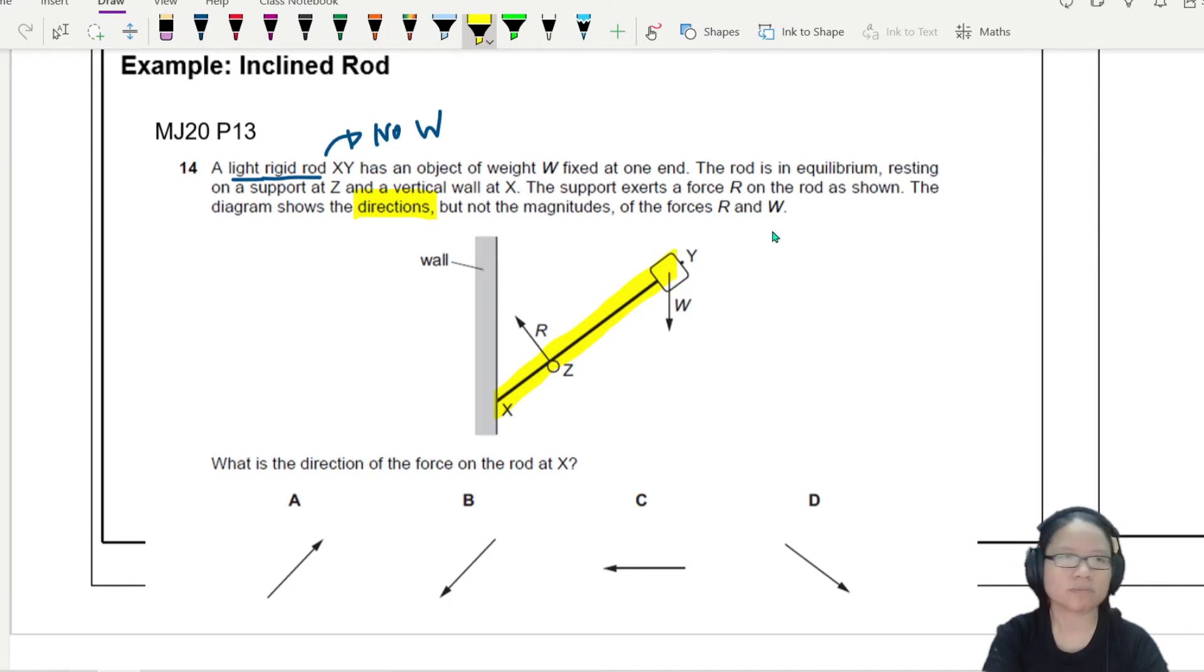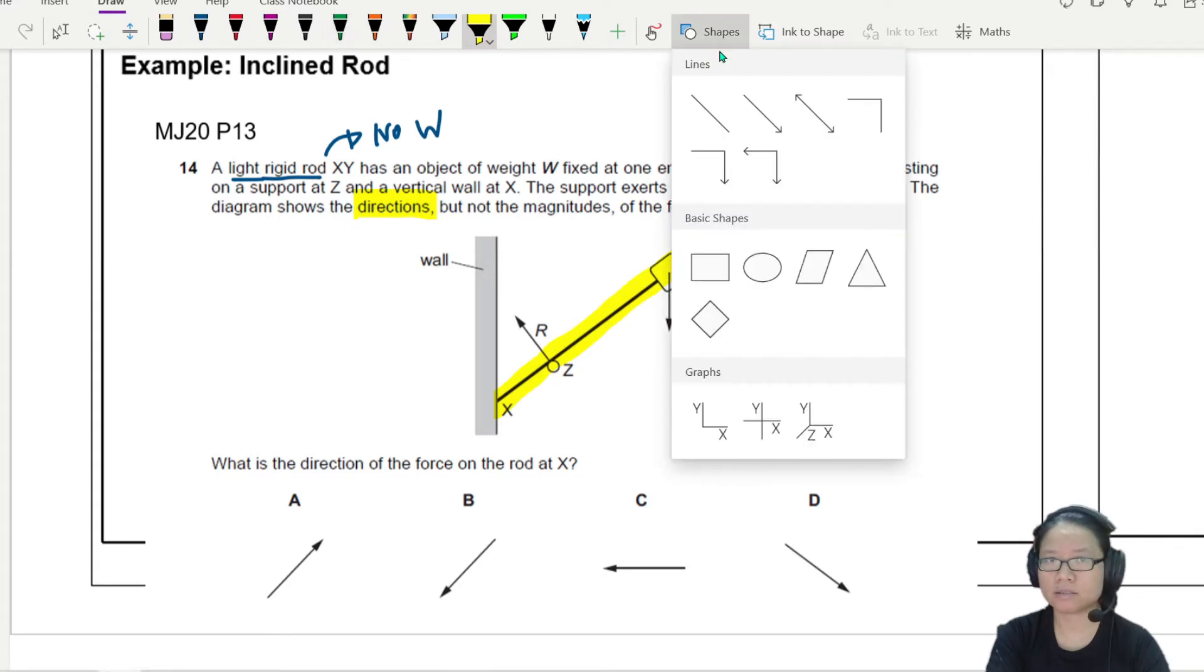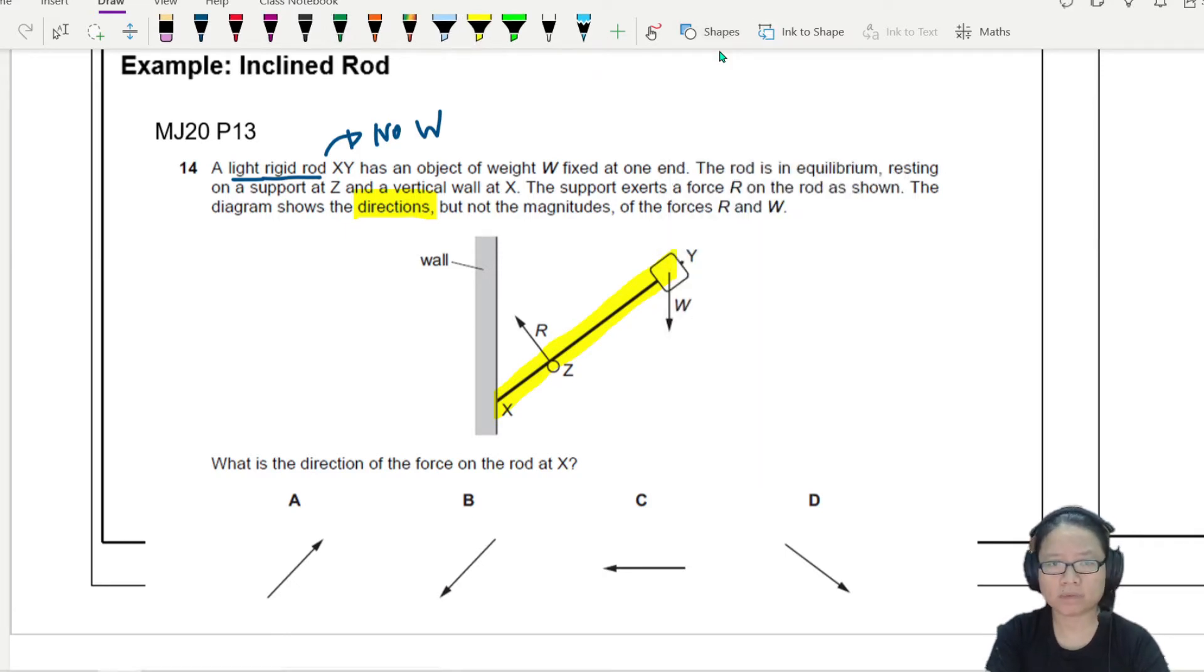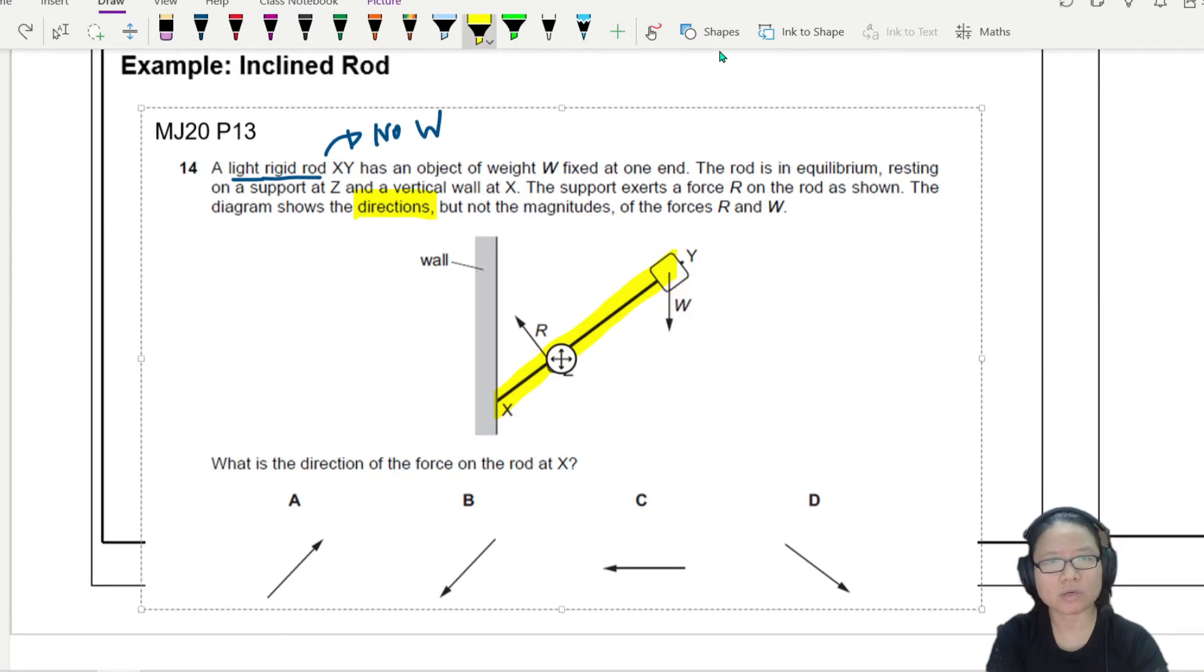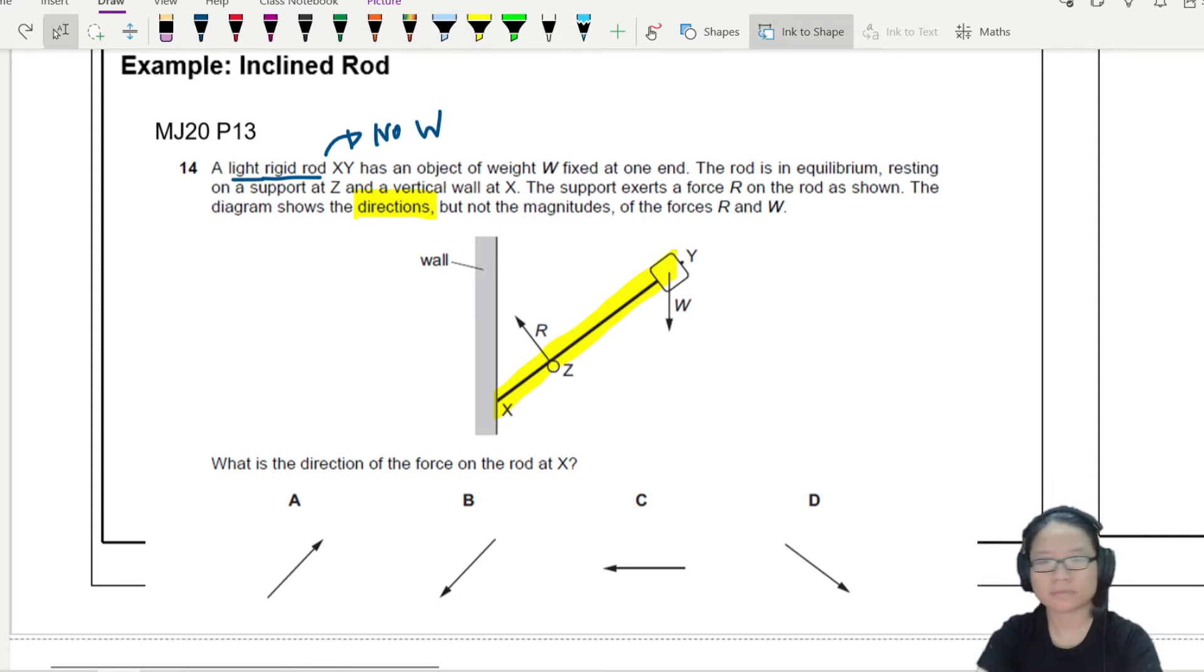You can extrapolate the line of force for W. Let me change color and extrapolate the line of action for W. I would draw a line like this - this is the line, or you could draw a vector dotted line.